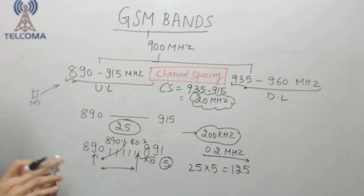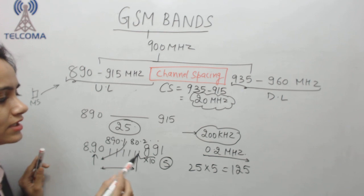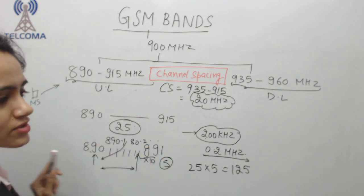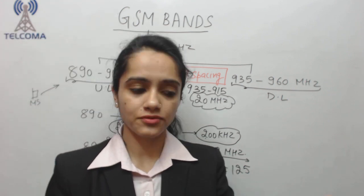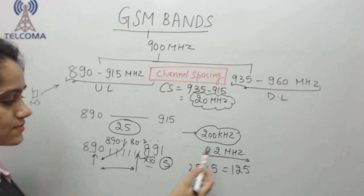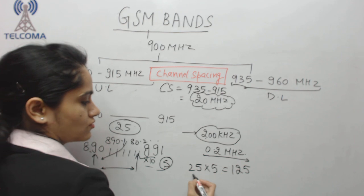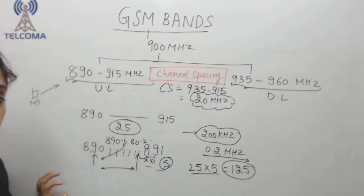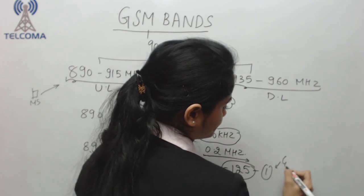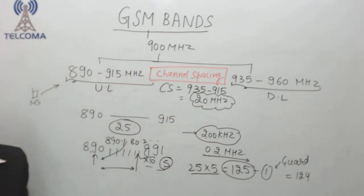To clarify: from 890 to 891 we have 10 divisions for FDMA, but we need to provide spacing between carriers so they do not interfere with one another. In FDMA, interference must be carefully managed. After spacing we keep 5 per megahertz, so 25 × 5 = 125, and then we leave 1 as a guard band, leaving us with 124.